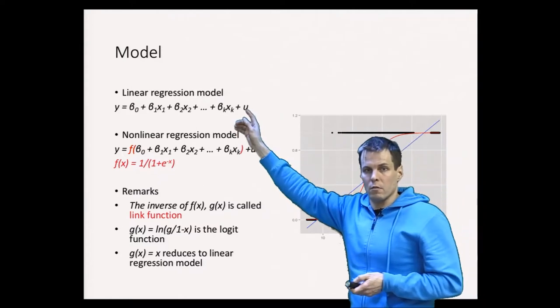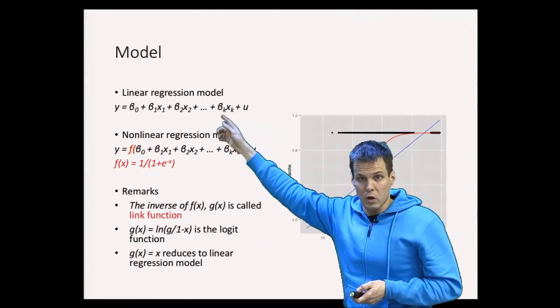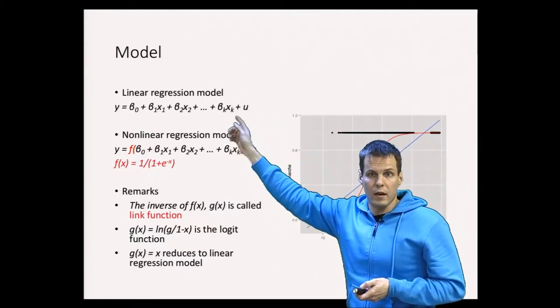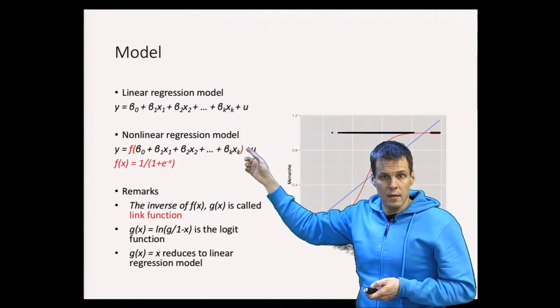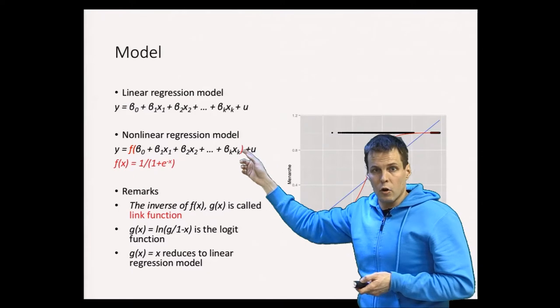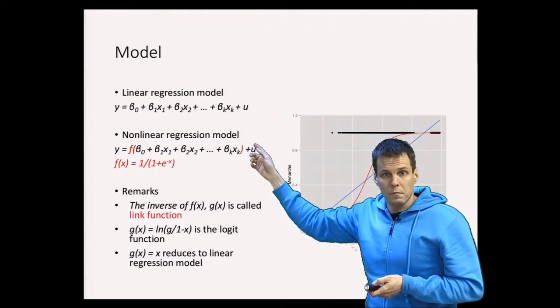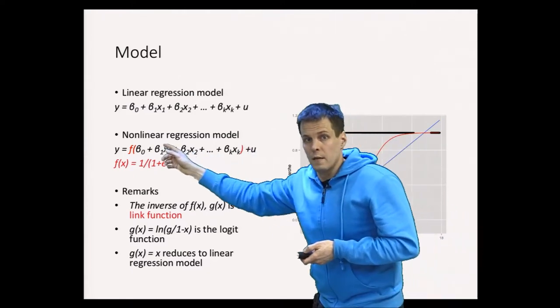First you have the linear regression model. That's the linear probability model because we have one binary dependent variable. And the logistic model extends the normal regression model by taking a function of this fitted value.